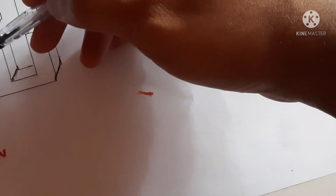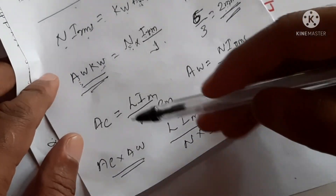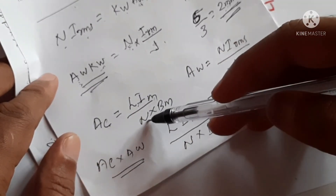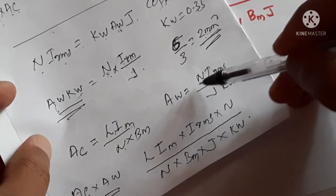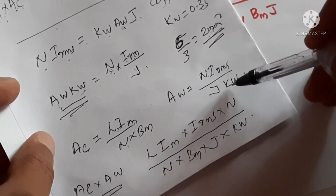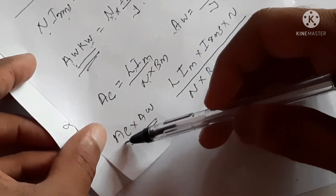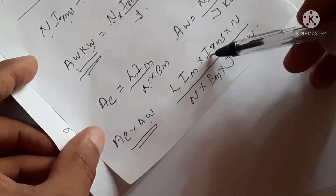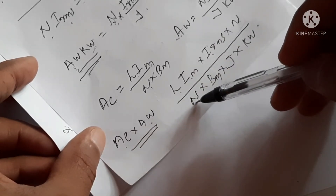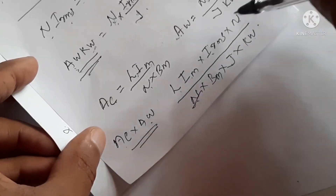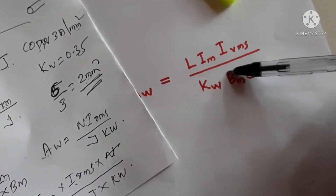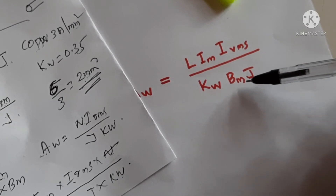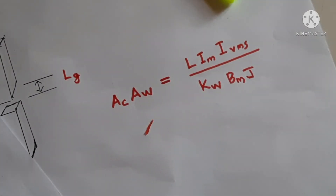We have AC = L times I_M divided by N times B_M, and AW = N times I_RMS divided by J times K_W. Multiplying both: AC times AW equals L times I_M times I_RMS divided by N, all divided by N times B_M times J times K_W. The two N terms cancel, giving the final area product: A_P = AC times AW = L times I_M times I_RMS divided by K_W times B_M times J. This is the area product method for calculating the core needed for inductors.